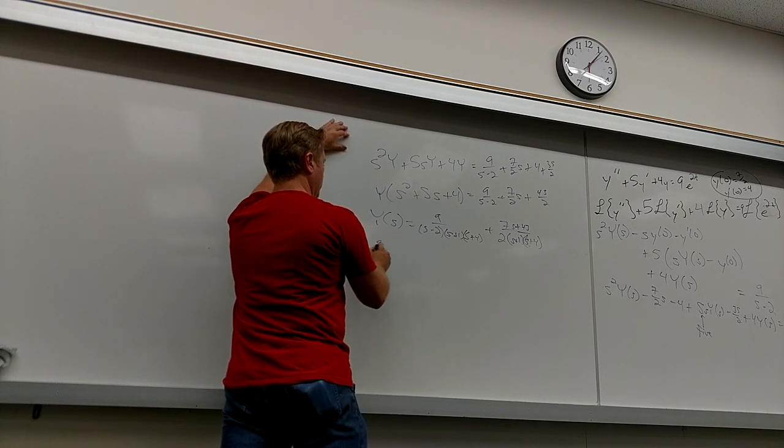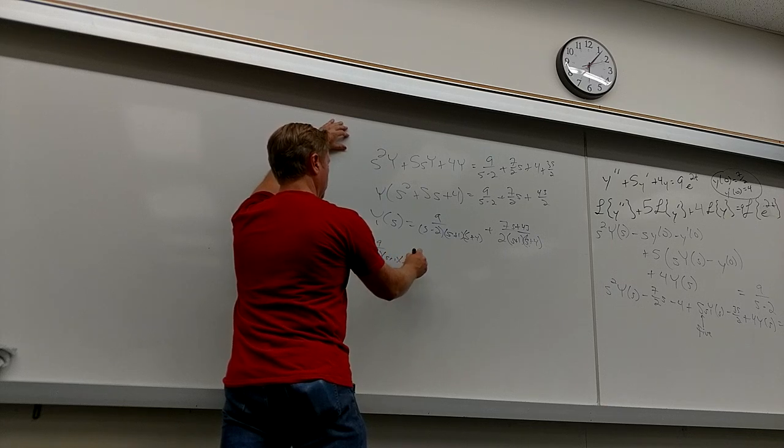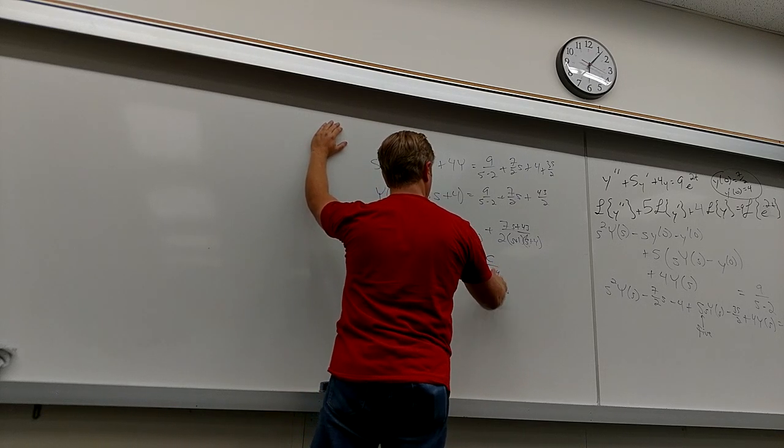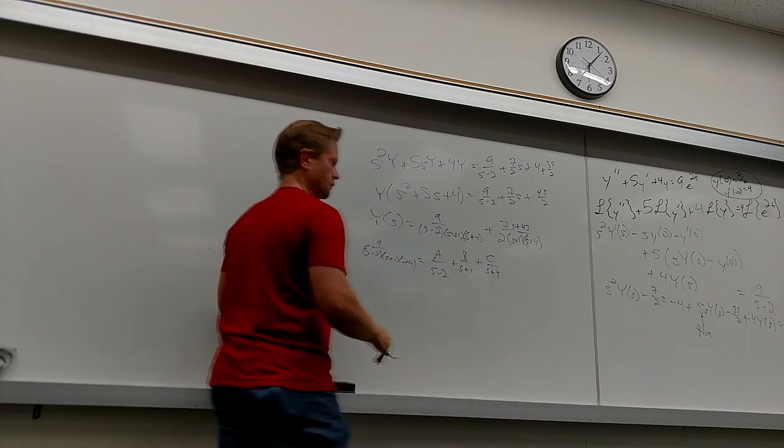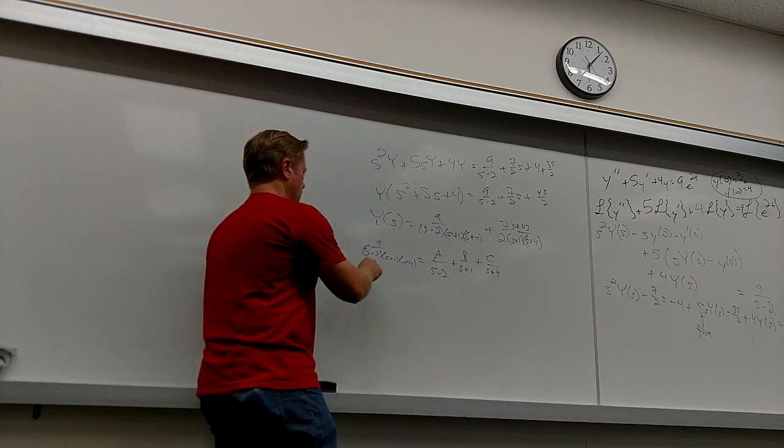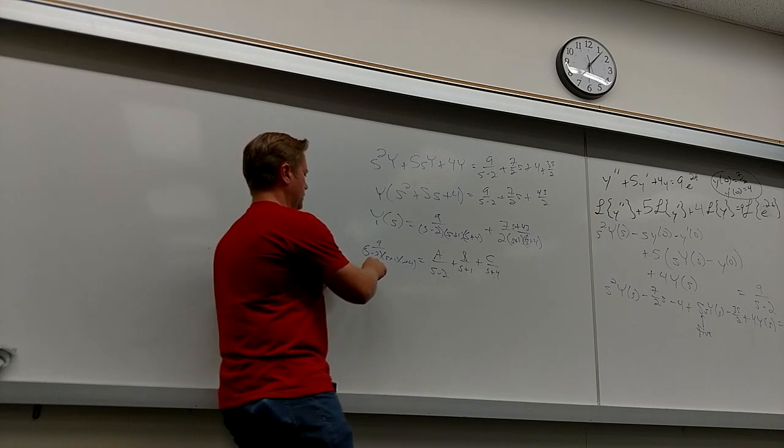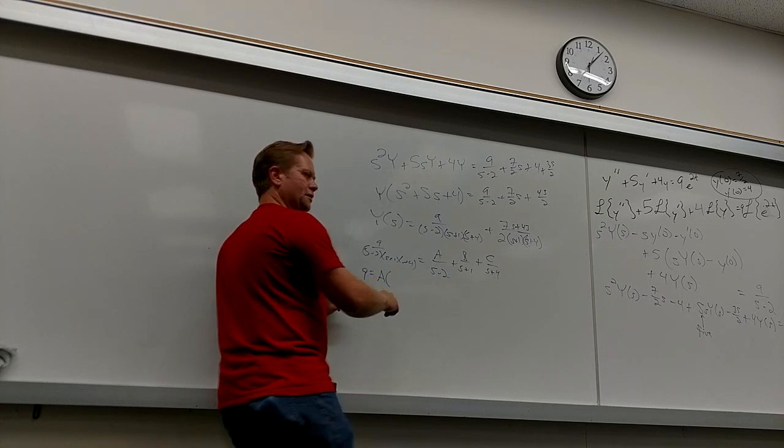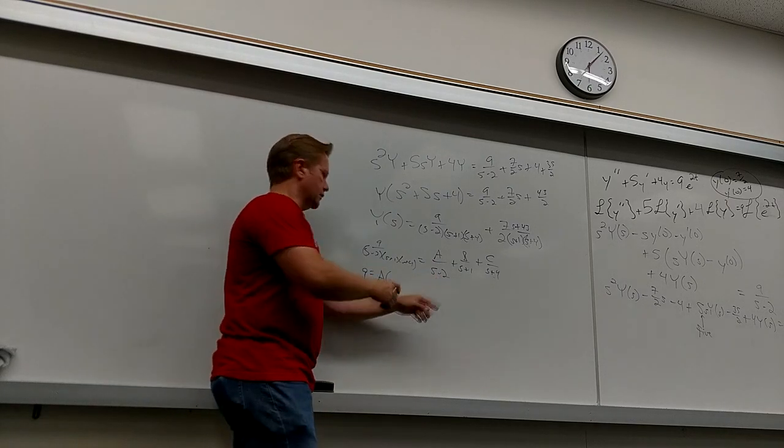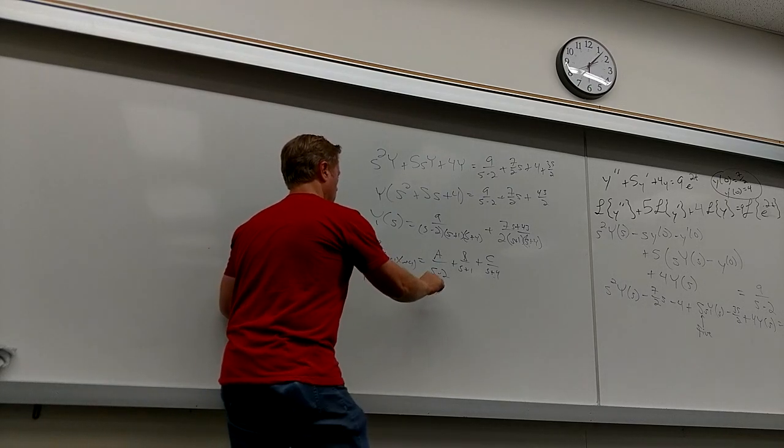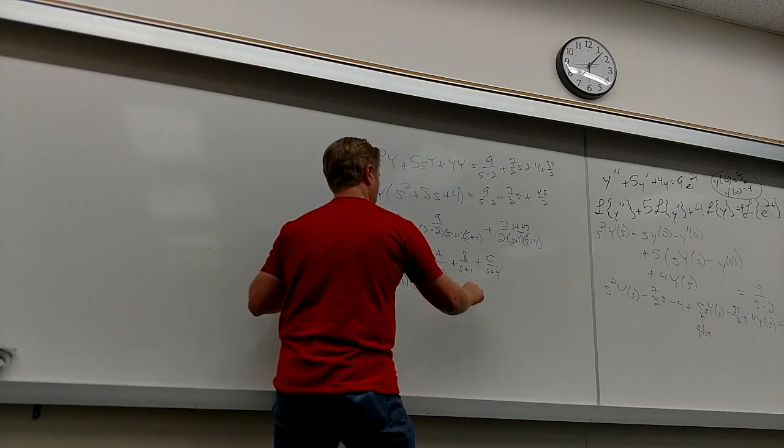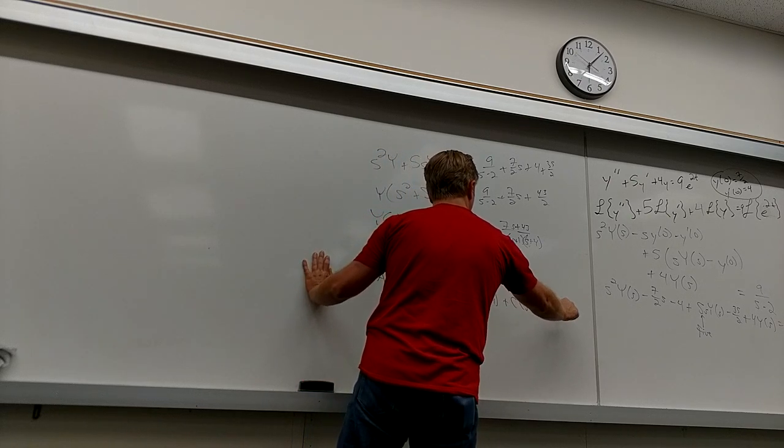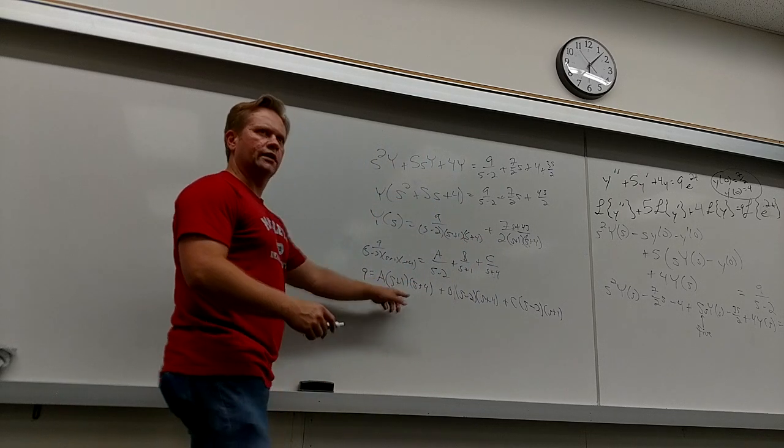So, how would I do that? How could you work on this here? You get 9 over S minus 2 times S plus 1 times S plus 4. You get A over S minus 2 plus B over S plus 1 plus C over S plus 4. And then, so, you get 9 equals, now, what's the quick way to do this? What does A get? Yeah, it's going to get everything that's not this because that canceled, so it gets the other 2. And then, B gets the other 2. And then, C gets the other 2.